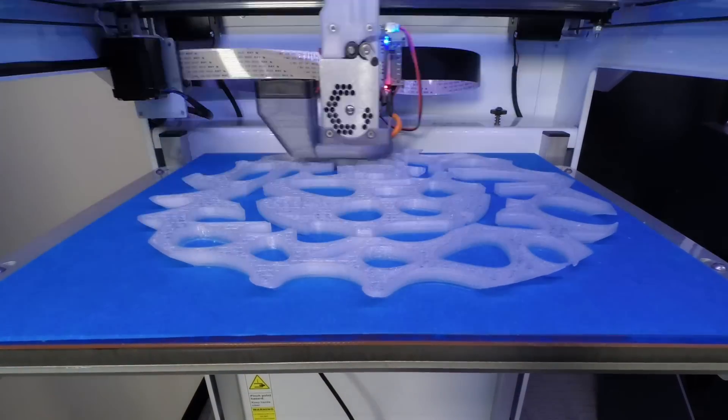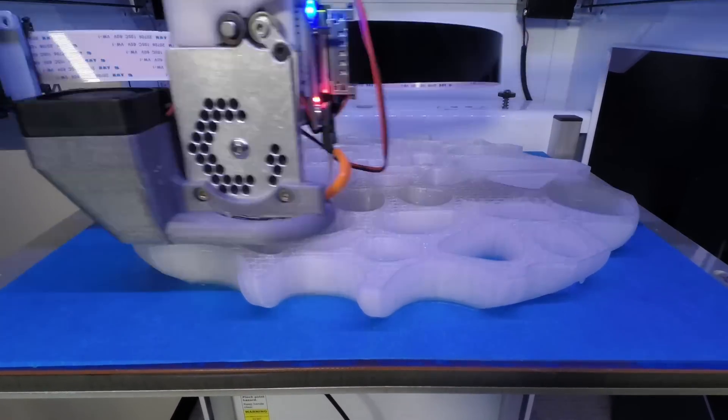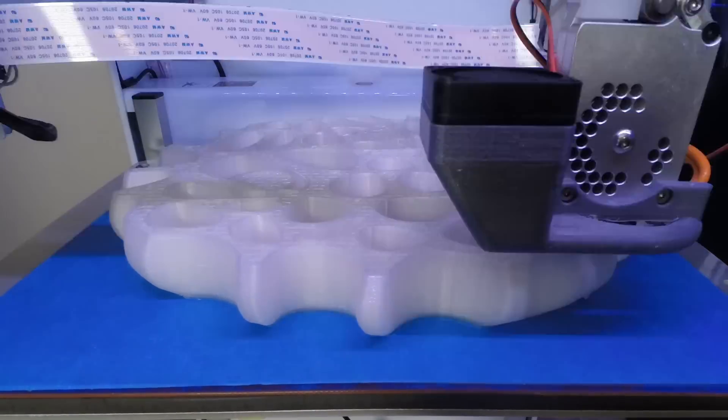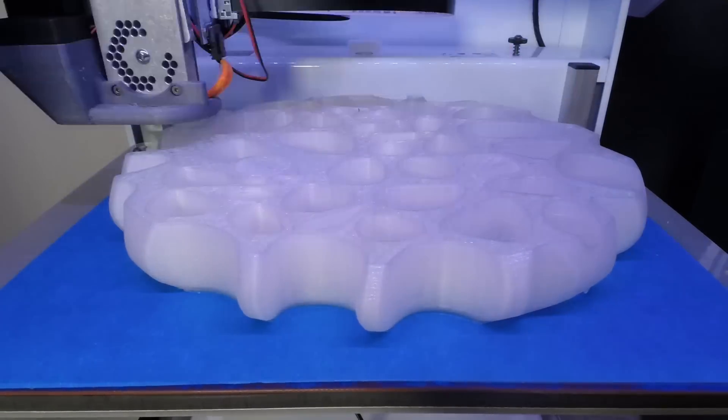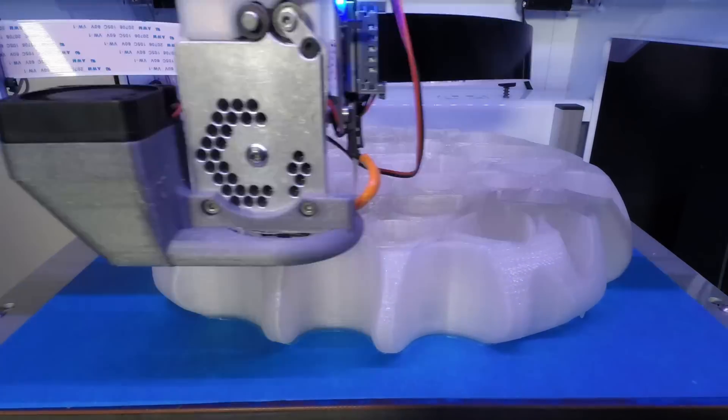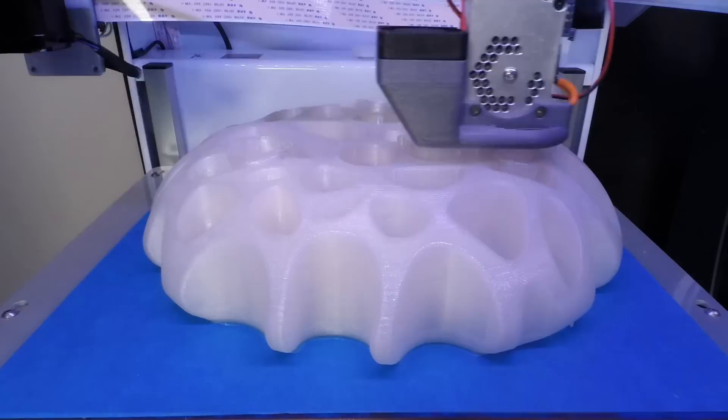The seat takes about 24 hours to 3D print and it requires a large build volume. We 3D printed this on a Type A Machines Series 1 Pro with a 30% infill and translucent PLA filament.